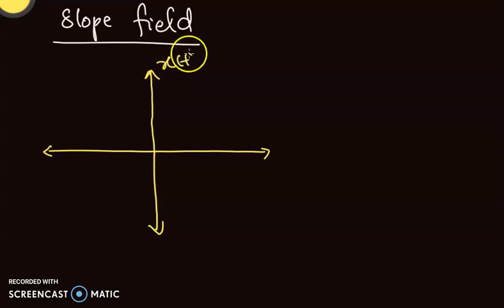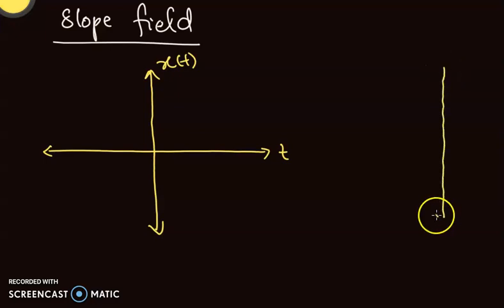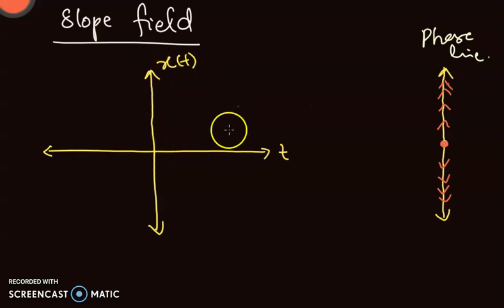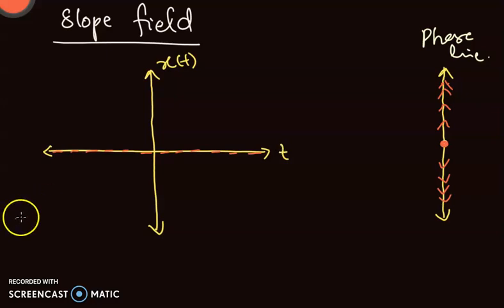This is x(t), which is the solution, and this is my time axis. Over here I have got my phase line. The phase line is telling me that at x = 0 we have equilibrium, then it's moving up, and for x less than 0 it is moving down. If x = 0 the slope is 0. If x is greater than 0 then the slope is positive, but slightly positive.